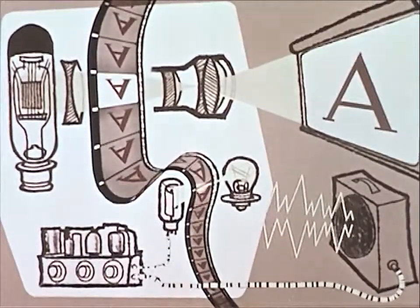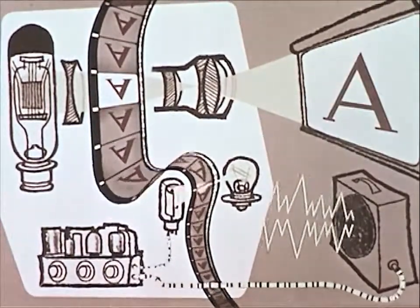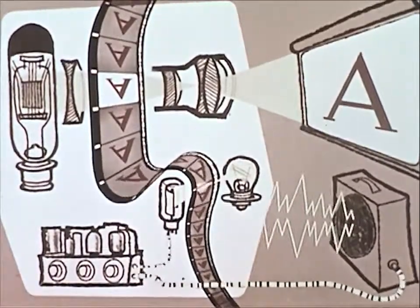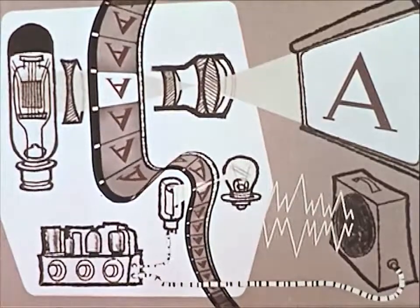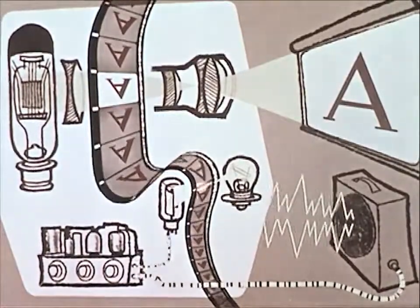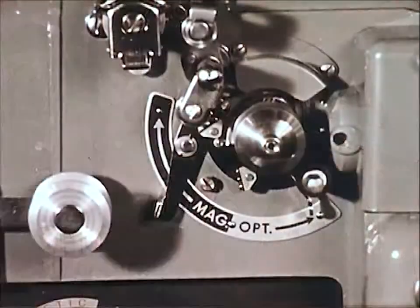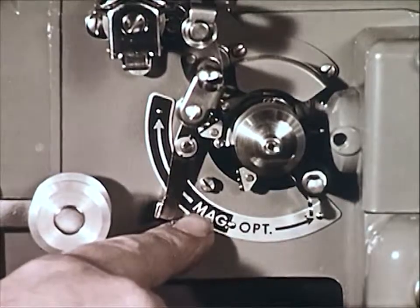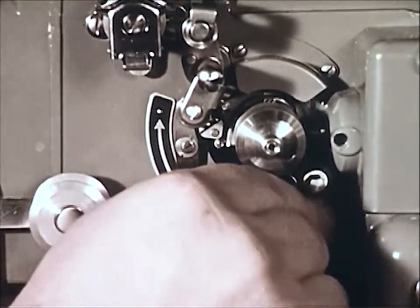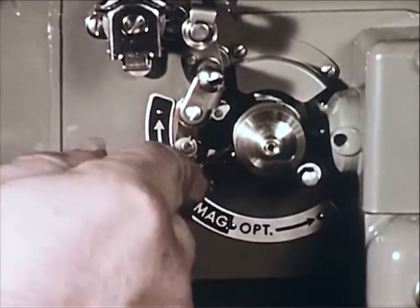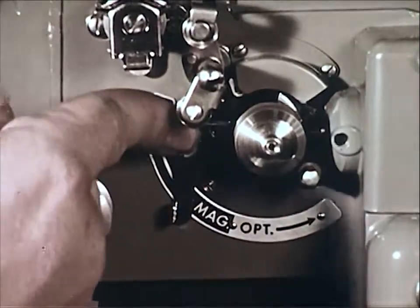In contrast to the picture section, the film in the sound section must move smoothly and at a constant speed. Some motion picture projectors are equipped to record and reproduce magnetic sound. This magnetic soundtrack coating often uses only part of the optical soundtrack area, making it possible to use either optical or magnetic sound on the same film.